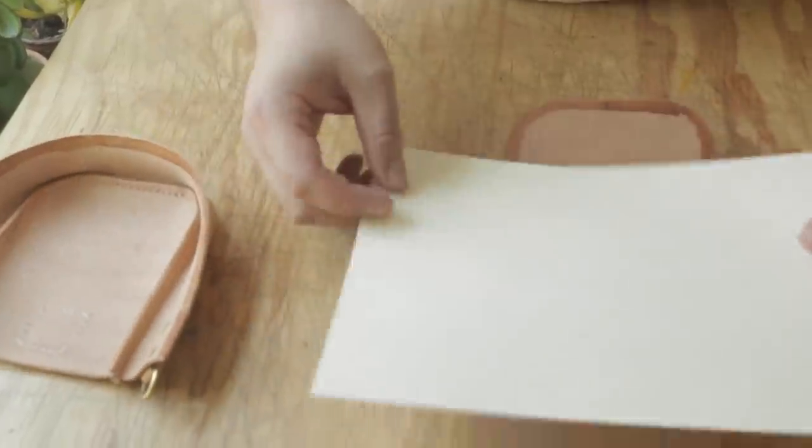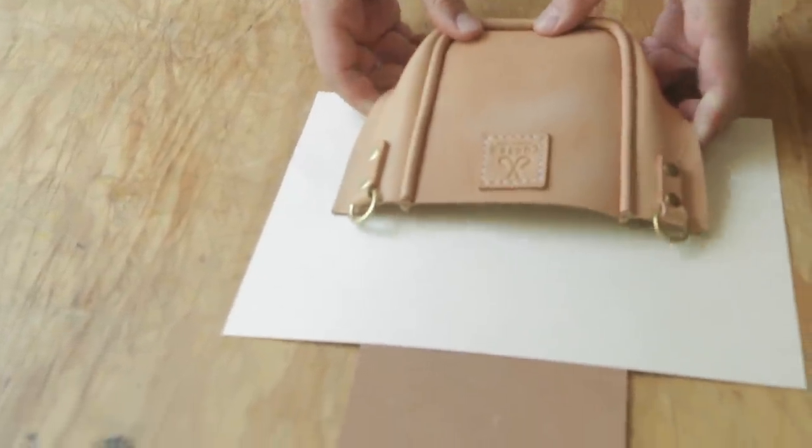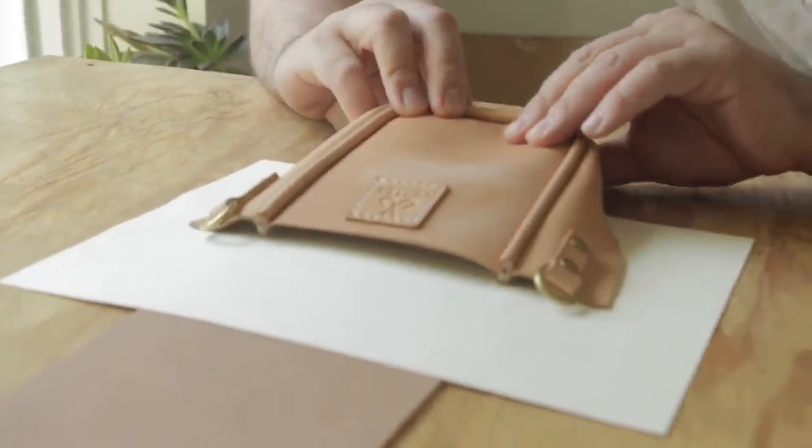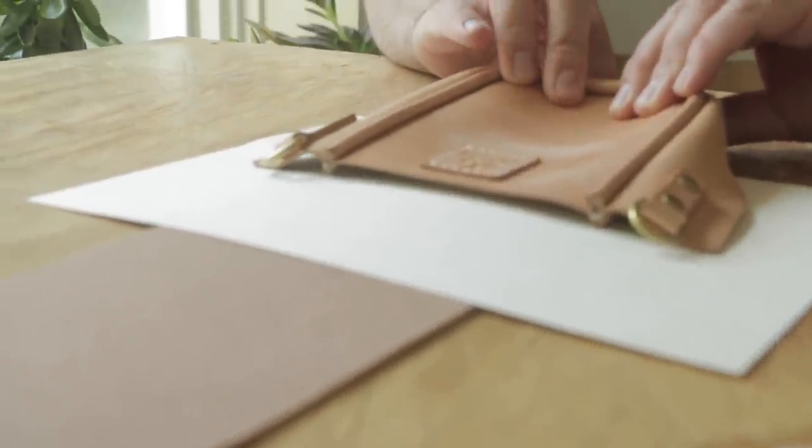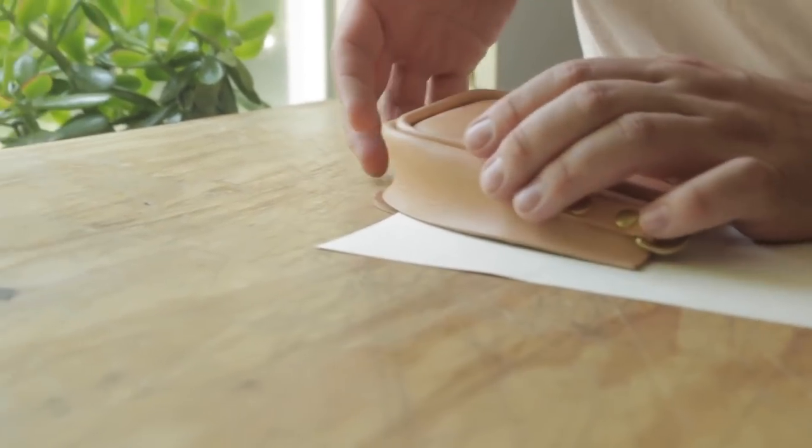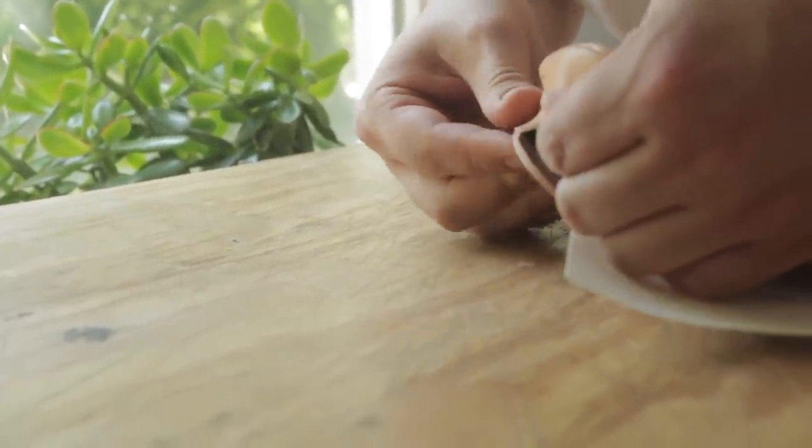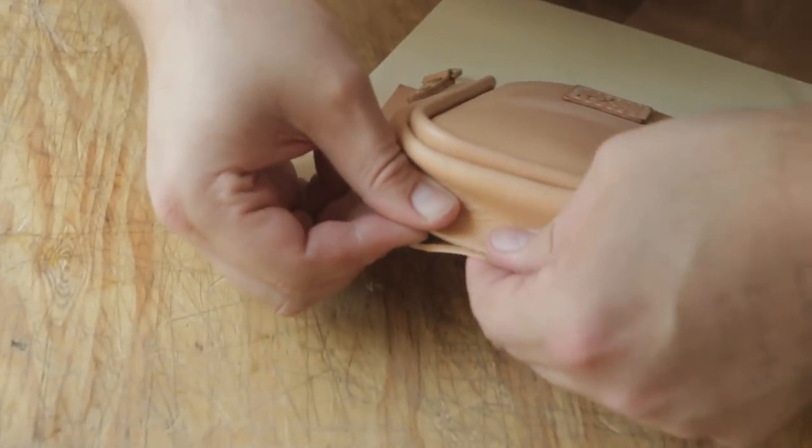So now that we have our glue dry, I have my piece of paper here and I'm going to use this to prevent the top from sticking while I'm getting the bottom all lined up. I'm going to go in and use my little marks here. There we go. Now this is going to be pretty difficult, so I apologize in advance if the camera angles aren't the best here.